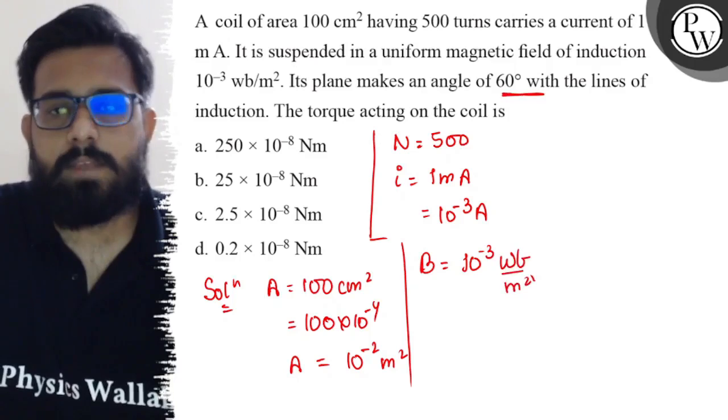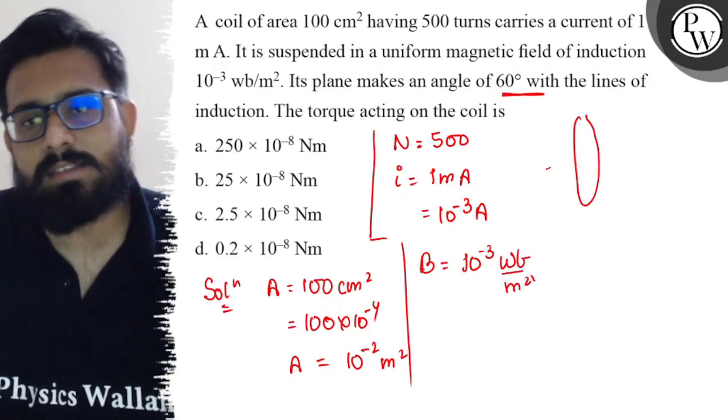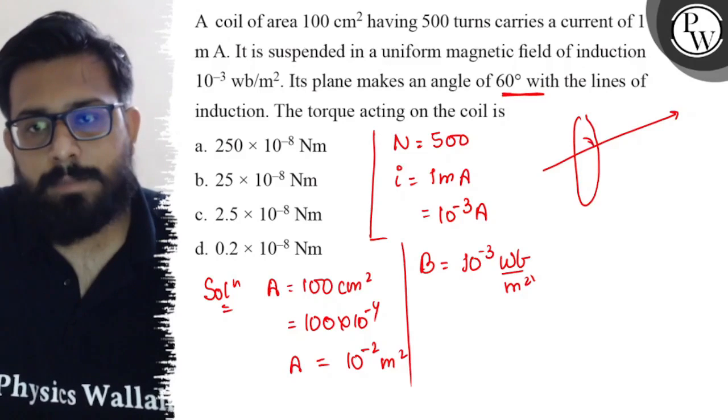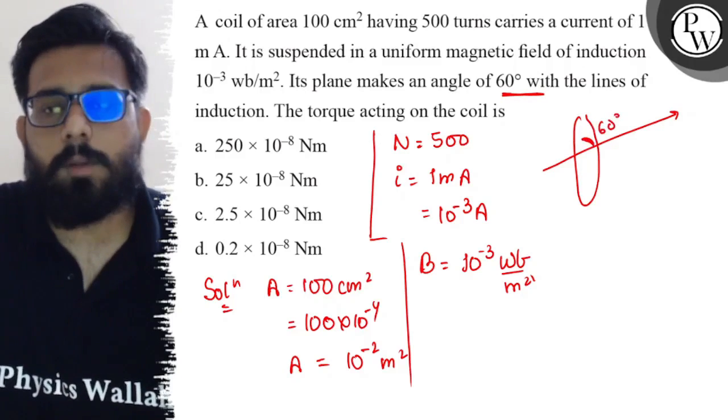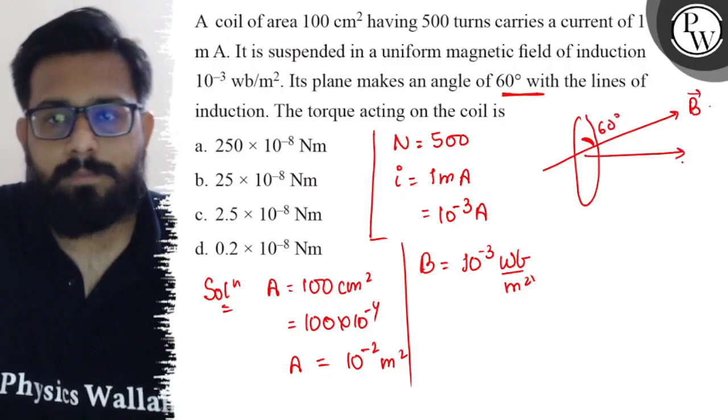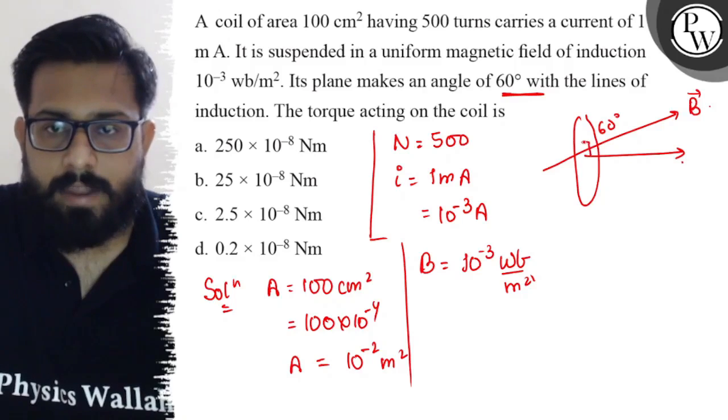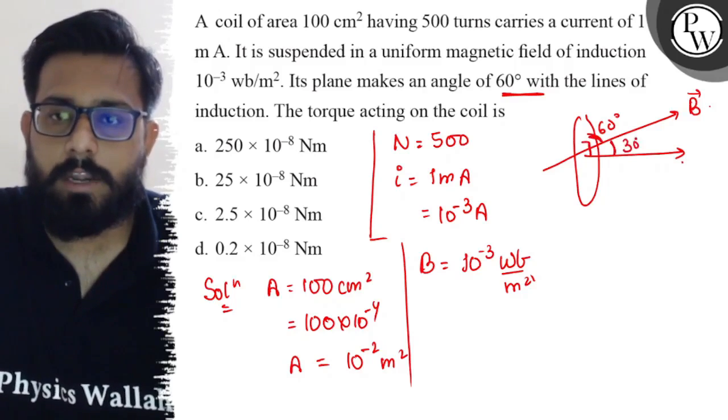The plane makes an angle of 60 degrees with the line of field. So suppose we have this coil and the magnetic field is such that its plane makes an angle of 60 degrees. So what about the area vector? The area vector is always perpendicular to the plane. So if this whole part is of 90 degrees, this part is of 60 degrees, so the remaining part comes out to be 30 degrees.